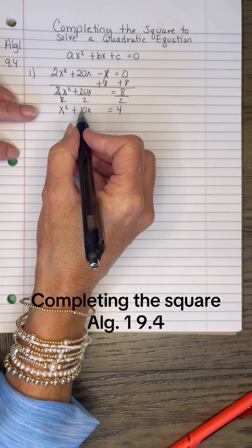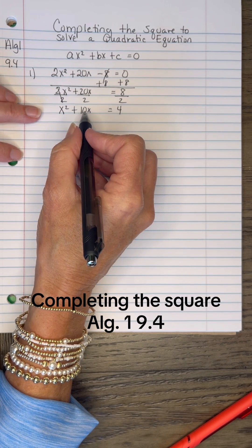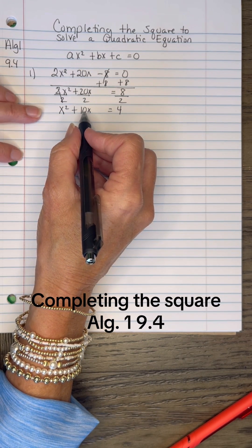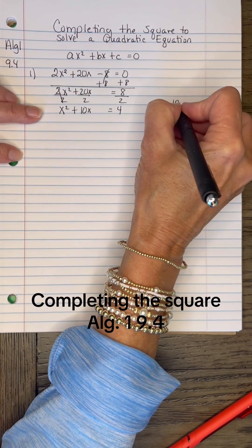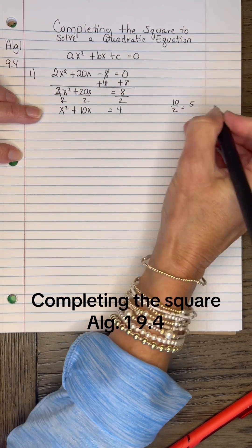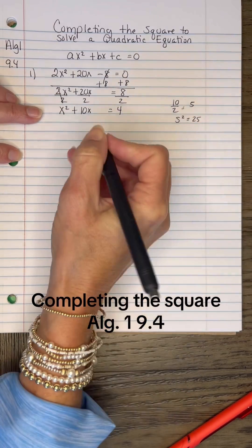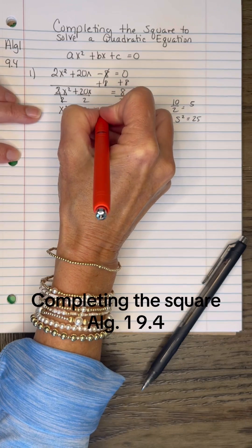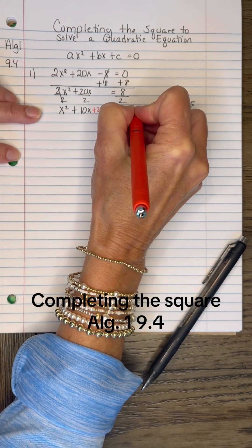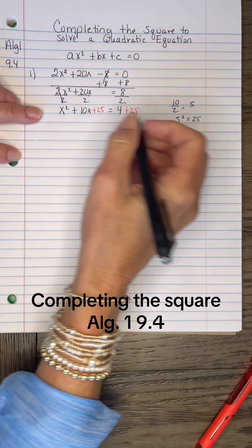To create a C that is perfect, you'll take the B, 10, and you'll half it. You're going to get 5. Then you take your 5 and you square it, and you're going to get 25. You need to add 25 to both sides of the equation to create that perfect square trinomial.